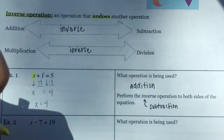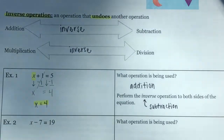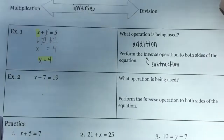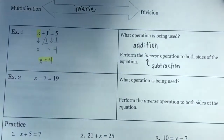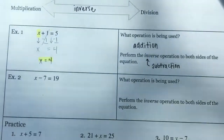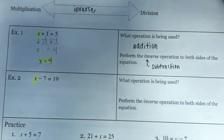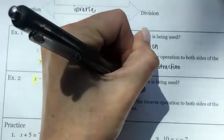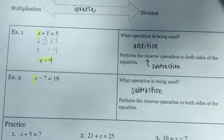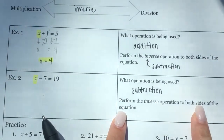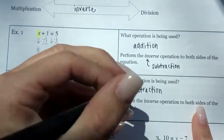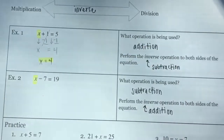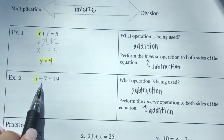For Example 2, we have X - 7 = 19. To solve for X, I need to figure out what's being done to X: 7 is being subtracted from X, so the operation being used is subtraction. We need to perform the inverse operation to both sides. Since the operation is subtraction, the inverse is addition.